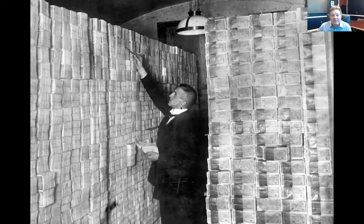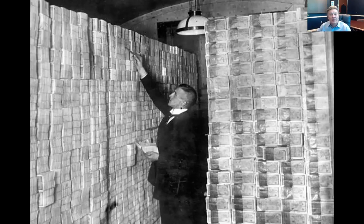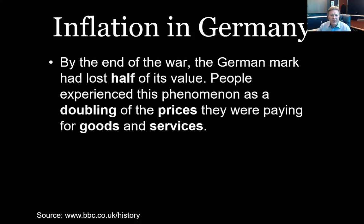The new Weimar Republic made its first payment in 1921. Germany thought they could just print the 132 billion marks and hand them over, but the French said no — they needed gold and coal. France marched into the Ruhr region and just took the coal; there was nothing the Germans could do since their army had stood down. By the end of the war the German mark had already lost half its value.